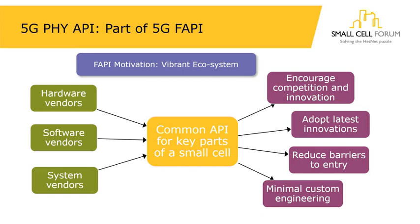That grouping of people comes about from the way small cells are typically formed. Historically, you have a small cell vendor who puts together their small cell from a collection of parts from different hardware and software vendors. So if we all work together with a set of common APIs, we end up with an interchangeable set of parts. The purpose is to encourage competition and innovation within the industry. If a system vendor wants to adopt the latest innovations in silicon, software, or a new 3GPP feature, it minimizes the amount of custom engineering they have to do. And if there's a new entrant into the market, they can immediately become part of that interchangeable set of parts.